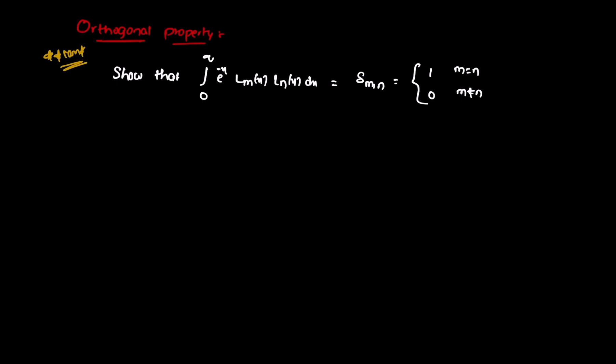is equal to delta(m, n). So, delta(m, n) is the Kronecker delta function — either 1 or 0.